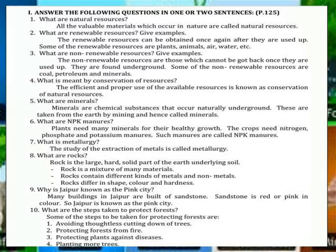What are minerals? Minerals are chemical substances that occur naturally underground. These are taken from the earth by mining and hence called minerals. Plants need many minerals for their healthy growth. The crops need nitrogen, phosphate and potassium minerals. Such minerals are called NPK minerals.